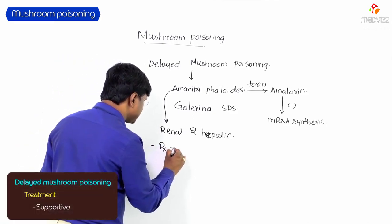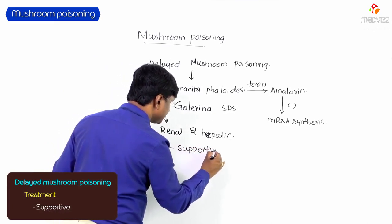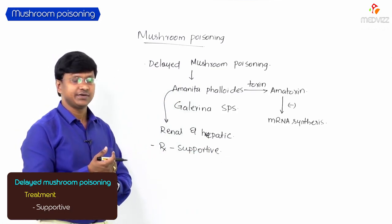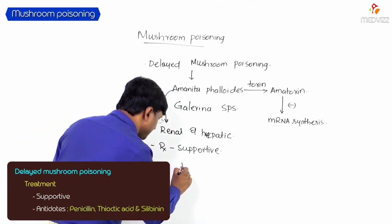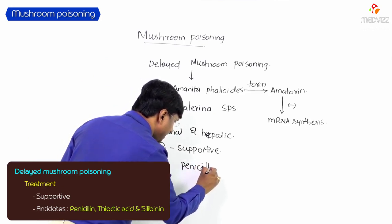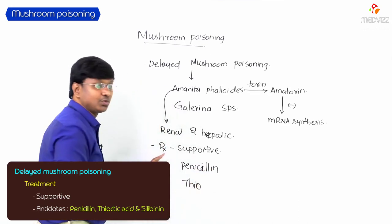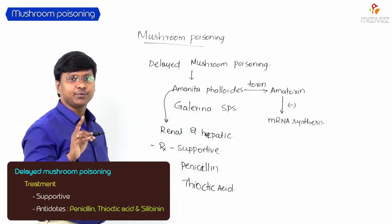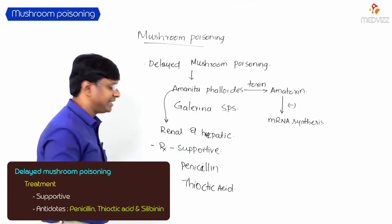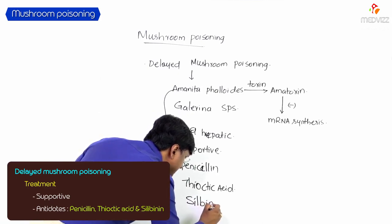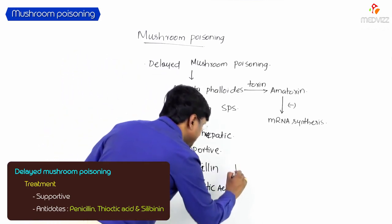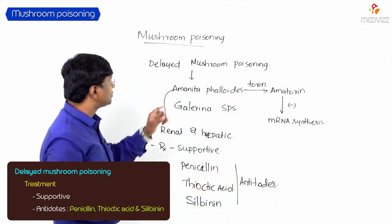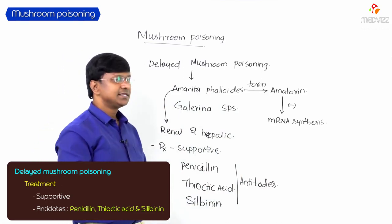The treatment for delayed mushroom poisoning is largely supportive. The antidotes available include penicillin, thioctic acid, and silbinin. These drugs act as antidotes in Amanita phalloides poisoning.